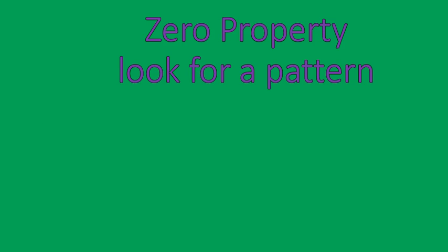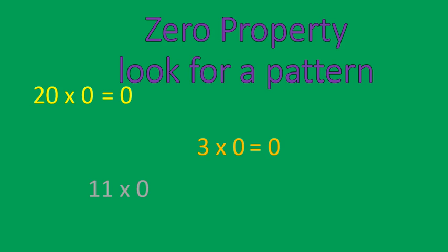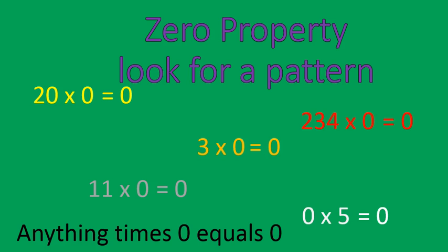Our last two properties. The zero property — look for a pattern here: twenty times zero equals zero, three times zero equals zero, eleven times zero equals zero, zero times five equals zero, and two hundred thirty-four times zero equals zero. Do you see a pattern? Anything times zero equals zero — and that is the zero property of multiplication.